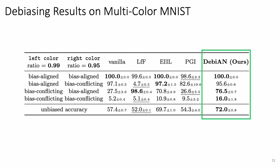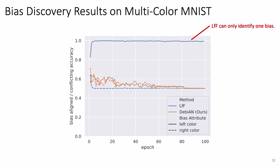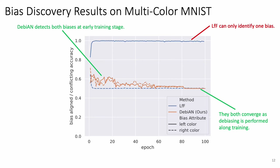In terms of de-biasing performance, Debian achieves the best results in mitigating multiple biases on Multicolor MNIST. In terms of bias discovery results on Multicolor MNIST, LFF, the previous de-biasing work, can only identify one bias under the multi-biased setting. In contrast, Debian can successfully find both biases at the early training stage, then accuracies gradually converge to random chance level, as de-biasing is performed in the classifier, making it harder for the discoverer to find biases.